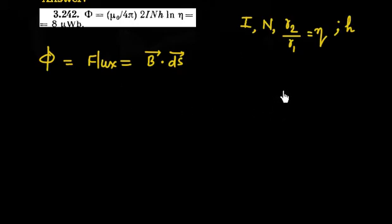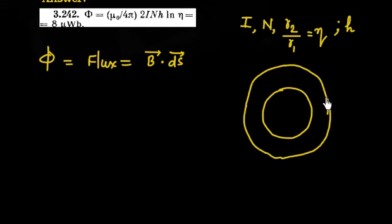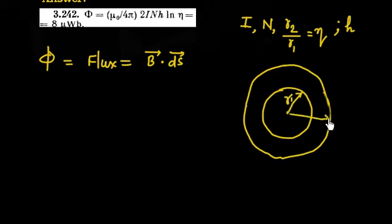So looking from the top you will see two circles. Let me draw these two circles — one inner circle and one outer circle. The inner radius is R1 and the outer radius is R2.